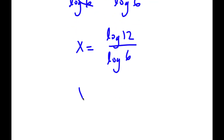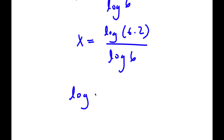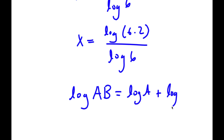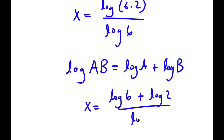Now, log 12 is the same thing as log 6 times 2, and I have this over log 6. If I have something in the form log a times b, this is equal to log a plus log b. So log 6 times 2, I can write as log 6 plus log 2, and I have this over log 6.